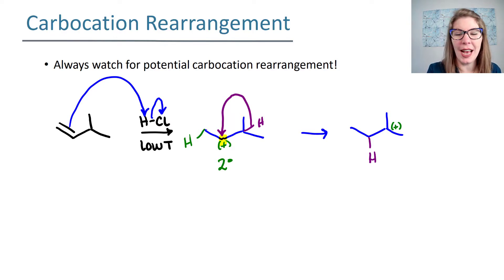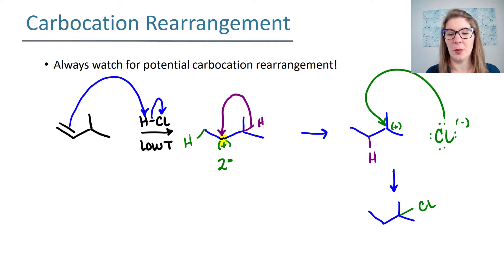Now that we've drawn this rearranged carbocation, let's go ahead and remember that we still have chloride ion running around in solution. So the chloride is going to attack the carbon that bears the positive charge, and we get this as our major product. That being said, carbocation rearrangements do happen really quickly, but it is possible that the chloride ion could attack before the rearrangement could occur. What that means for us is we have another potential product at the end coming from the chlorine attacking the secondary carbocation before it had an opportunity to rearrange. If that happens, your chlorine would be here, this would be your minor product.